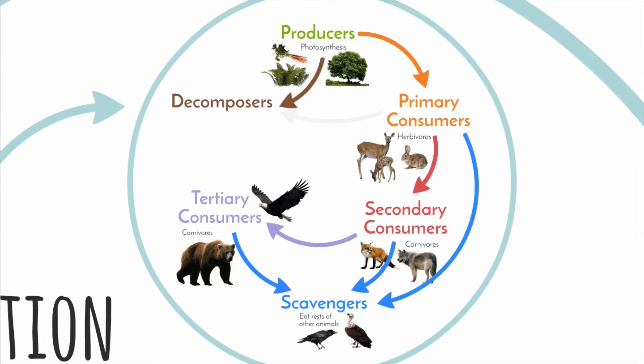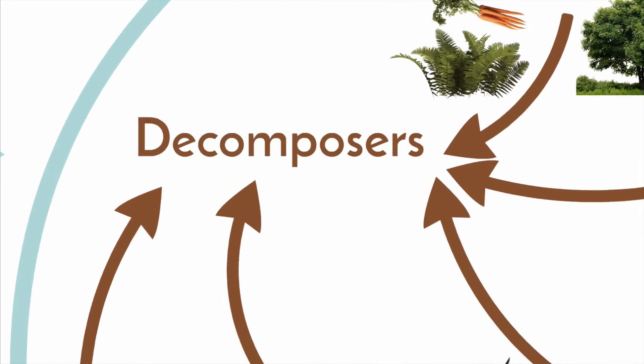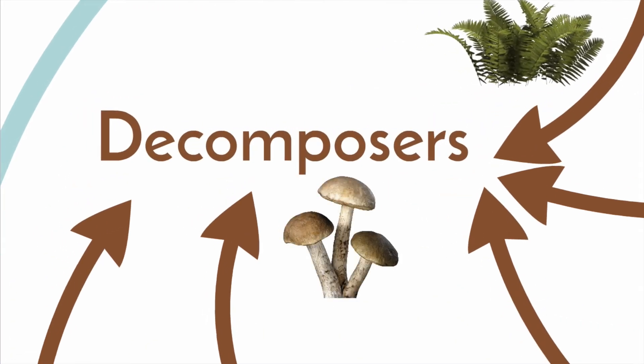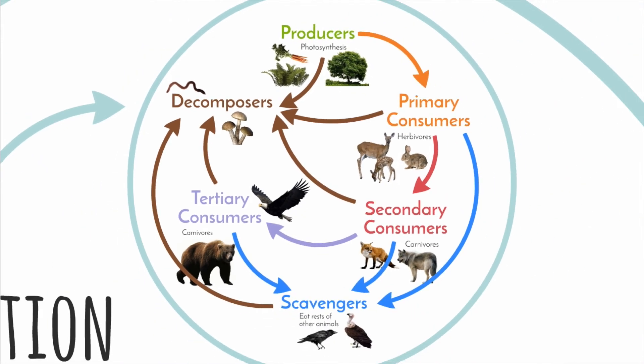Decomposers are mainly microorganisms and fungi. What they do is break down dead animals and plant materials into minerals. Those minerals then return to the soil and are used by producers.